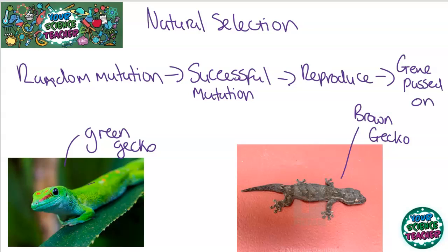This is actually how giraffes over time have developed such long necks. It's due to the fact that the long necks helped them to get leaves high in the trees. So they kept reproducing as they were the most successful and the strongest giraffes, and therefore giraffes grew longer and longer necks over time.